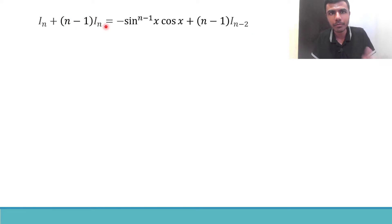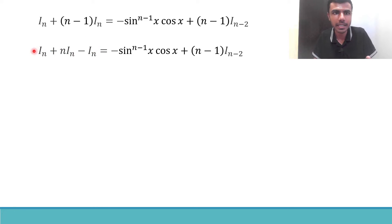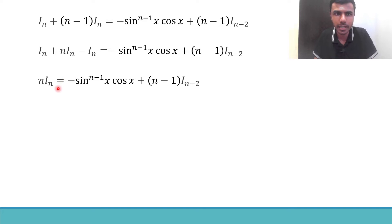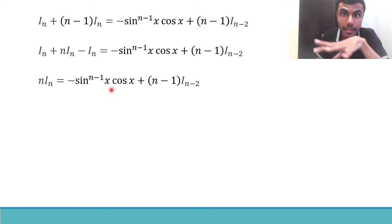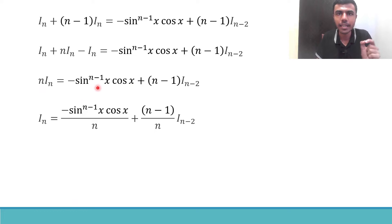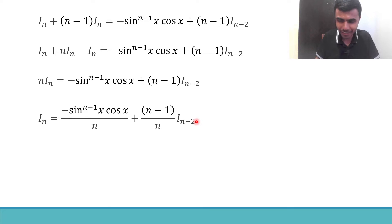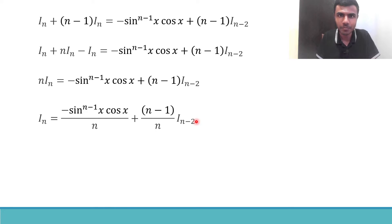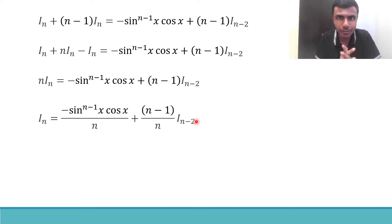Moving the −(n−1)·I_n to the LHS: I_n + (n−1)·I_n = n·I_n. So n·I_n = −sin^(n-1) x·cos x + (n−1)·I_(n-2). Dividing by n, we get the reduction formula: I_n = −sin^(n-1) x·cos x / n + ((n−1)/n)·I_(n-2). We've obtained the reduction formula for sin^n x.